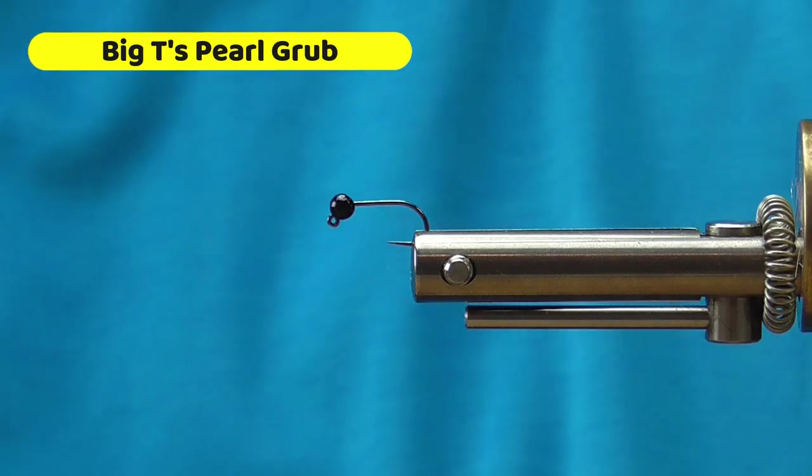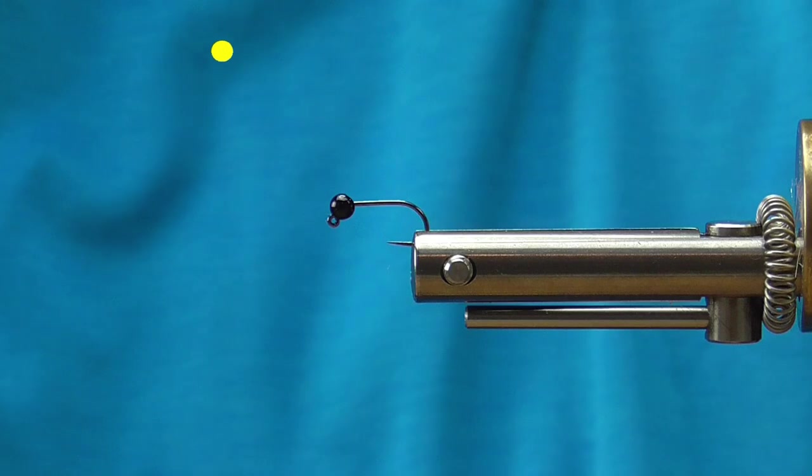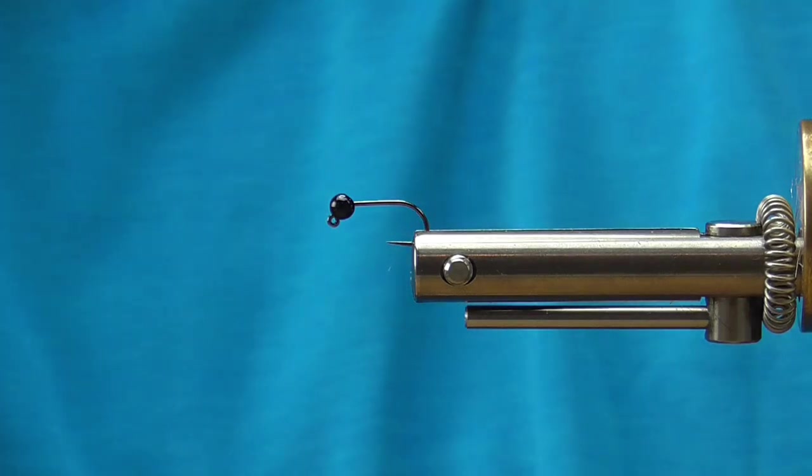Hey, it's Big T. I am going to put together a fly I call the Pearl Grub today. This is kind of a general type fly, doesn't necessarily imitate anything specifically, but does look very buggy. Could resemble a black fly larva or just your general ground grub.